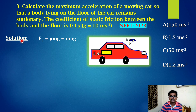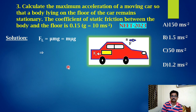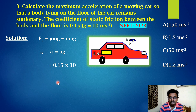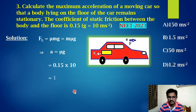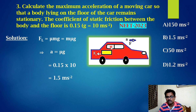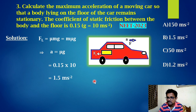Solution: limiting friction fl = μmg, which in the form ma gives a = μg. Substituting μ = 0.15 and g = 10, we get 0.15 × 10 = 1.5 m/s². So the maximum acceleration of the moving car for the body to remain stationary is 1.5 m/s². From the given options, option B is the answer.